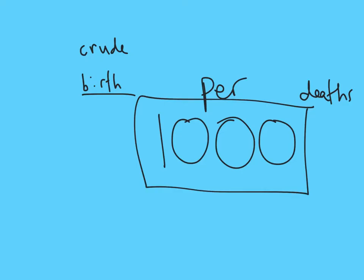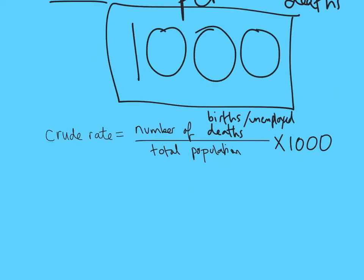The crude birth rate is how many births per 1,000 of the population, and the crude death rate is how many deaths per 1,000. This is really similar to percentage — instead of multiplying by 100 you multiply by 1,000. In some questions you may work out rates per 100 rather than 1,000 if stated. So the formula is: number of deaths, births, or unemployed people divided by the total population, times 1,000.